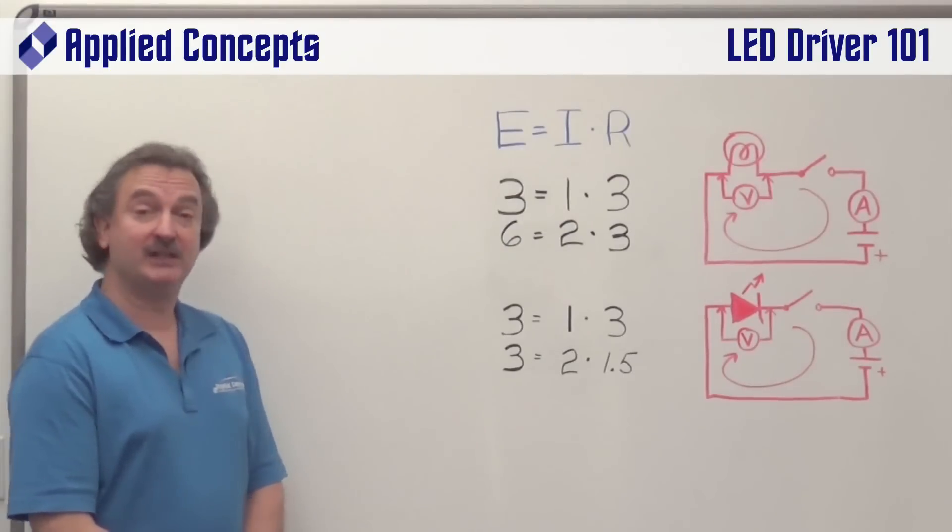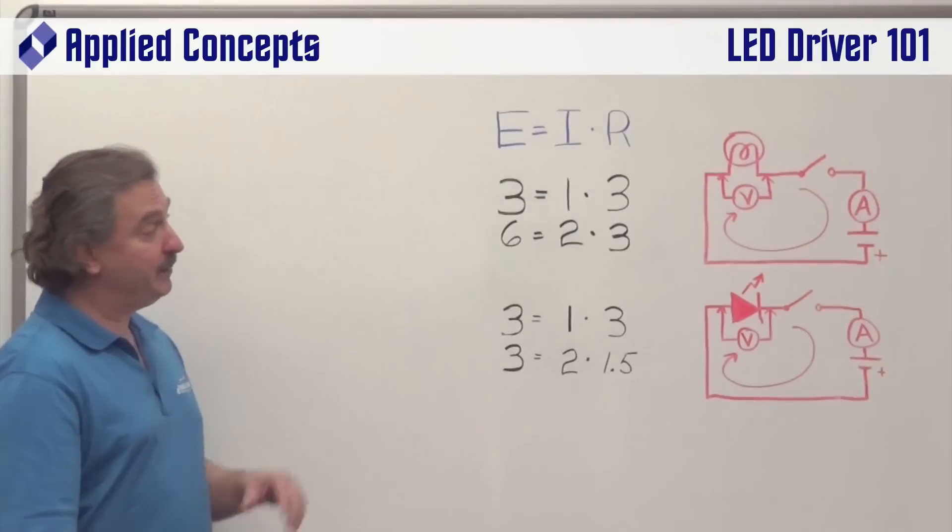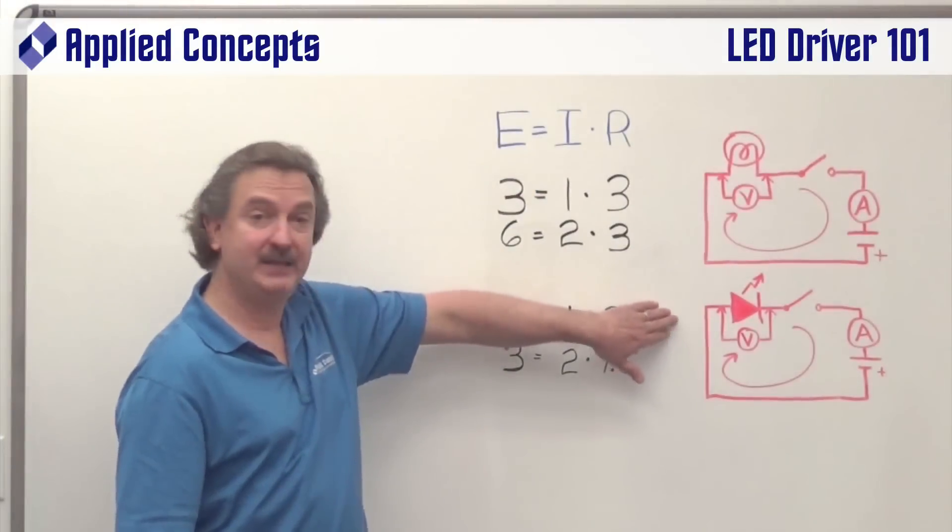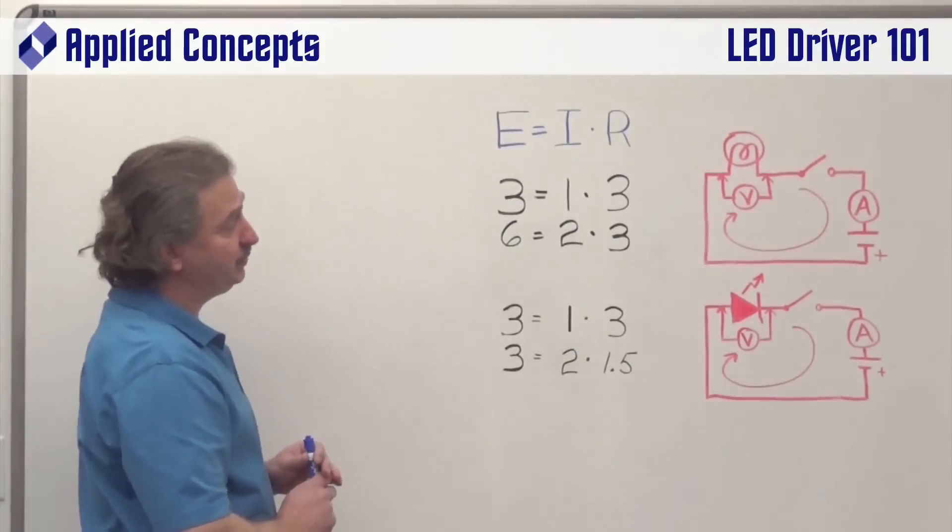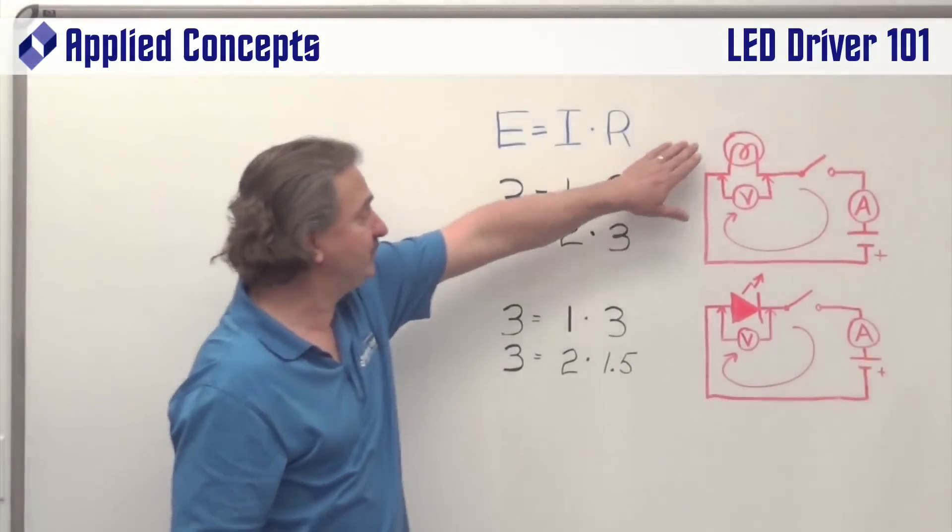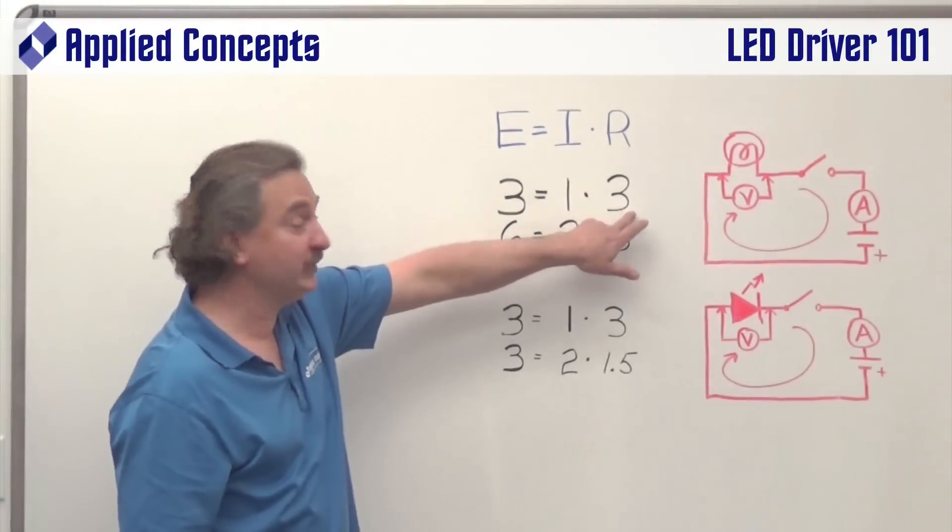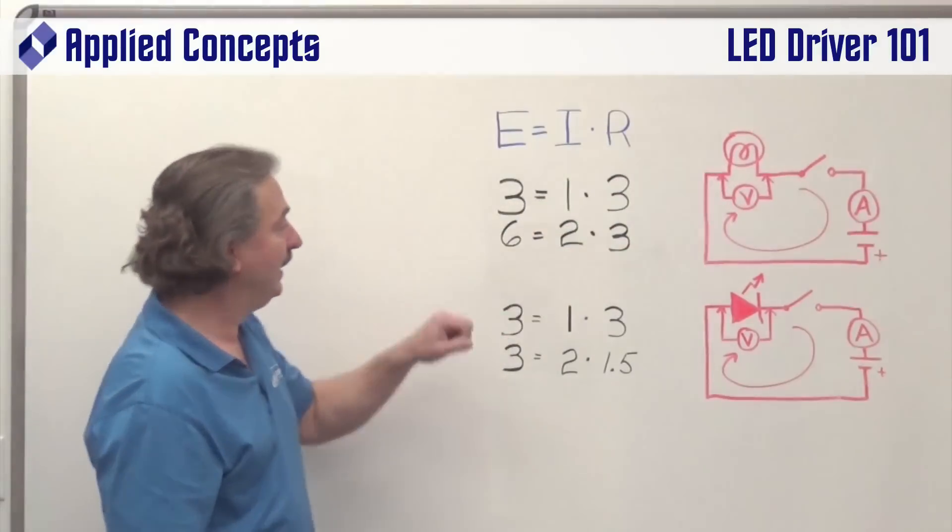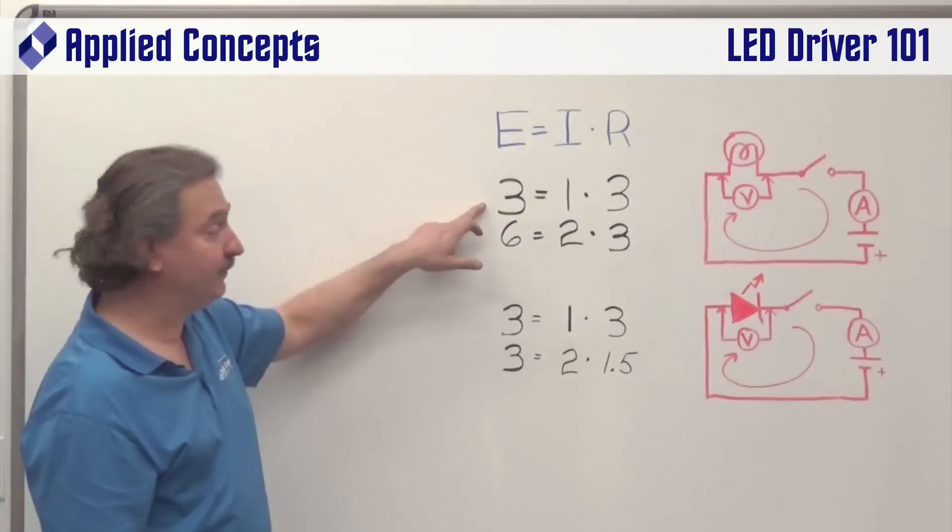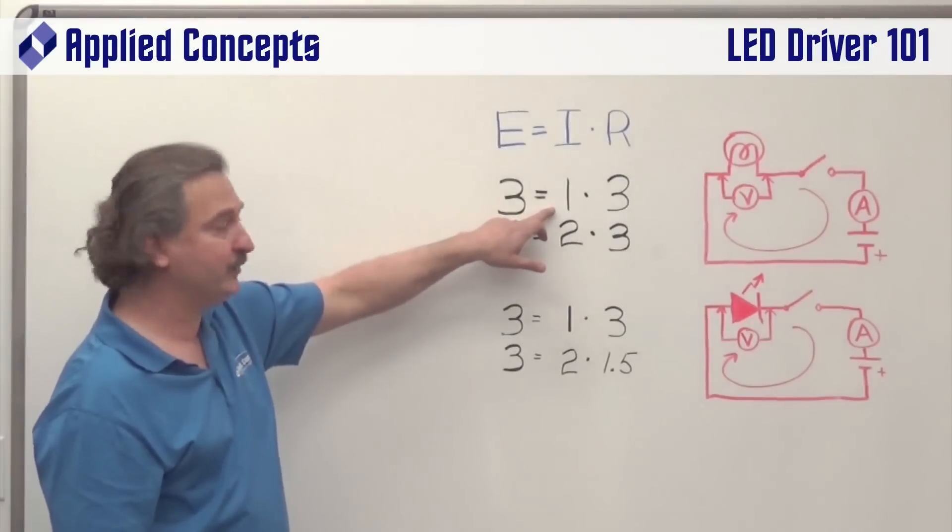Today we're going to discuss LED 101 and the basic differences between a resistive load and an LED load. We just put up a simple Ohm's law formula here to show that suppose we had a resistive load that had an impedance or resistance of 3 ohms, as indicated by Mr. Ederson's light bulb here.